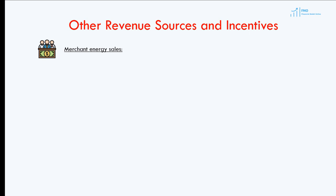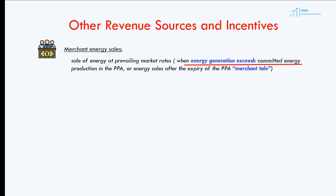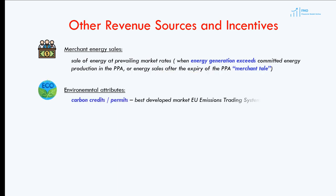First, the power project may produce energy above the committed energy production, and this excess energy can be sold at market prevailing rates to buyers other than the off-taker. Second, the PPA term may be shorter than the life of the project, and energy generated after the PPA period will also be sold at market prices — this period is called the merchant tail. The PPA may also include environmental attributes such as carbon credits. Typically, the off-taker receives the carbon credits associated with the energy purchased from the renewable project. However, if the PPA does not include the sale and purchase of carbon credits, those credits can be sold separately.